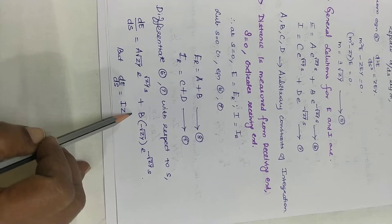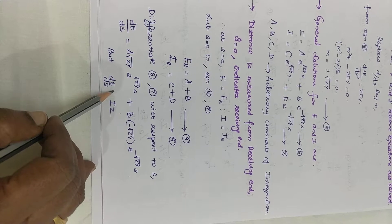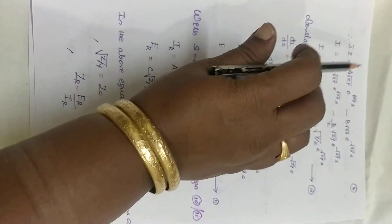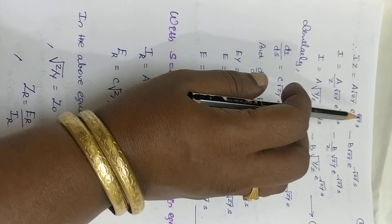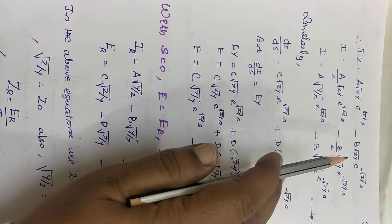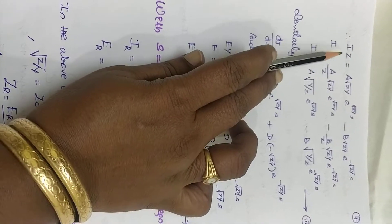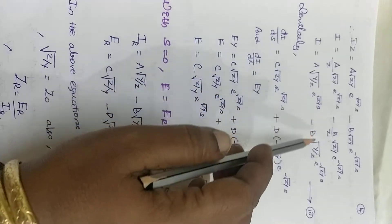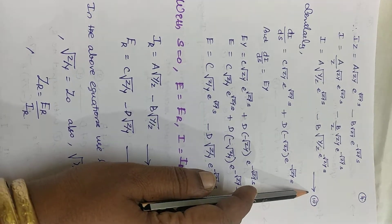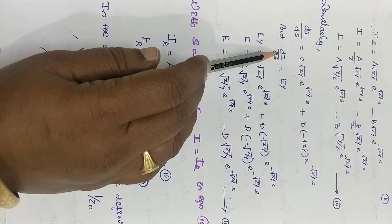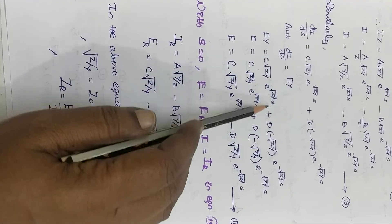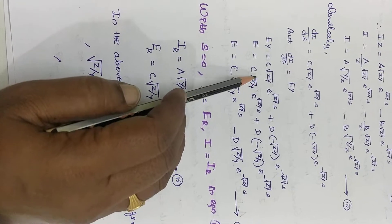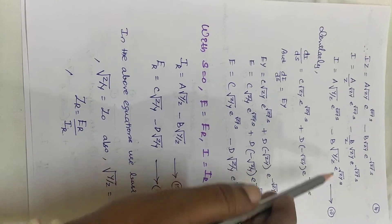Differentiating again with respect to S and using dE/dS equal to IZ, we equate the left-hand side to IZ. So IZ equals A·√ZY·e^(√ZY·S) minus B·√ZY·e^(-√ZY·S). Bringing Z inside the square root gives √(Z²), so Z cancels, leaving I equals A·√(Y/Z)·e^(√ZY·S) minus B·√(Y/Z)·e^(-√ZY·S). Similarly, writing the current equation and equating dI/dS to EY, Y is brought down and the final equations of E and I are termed equations 10 and 11.